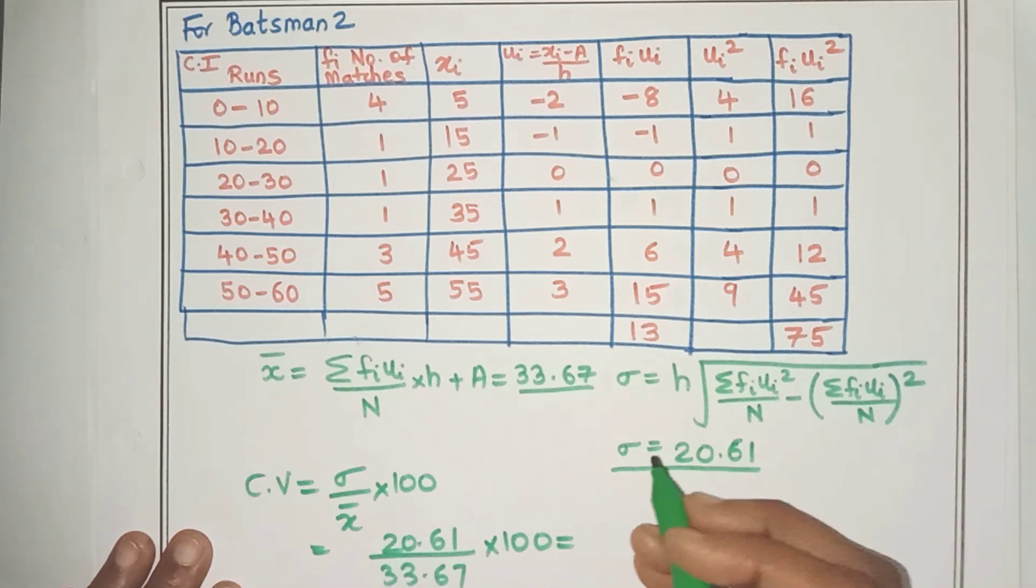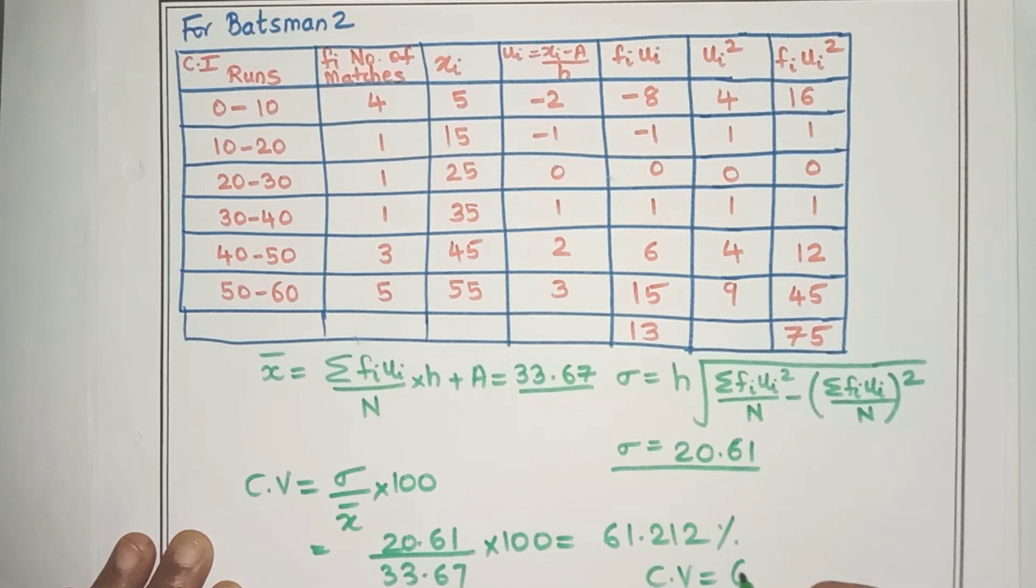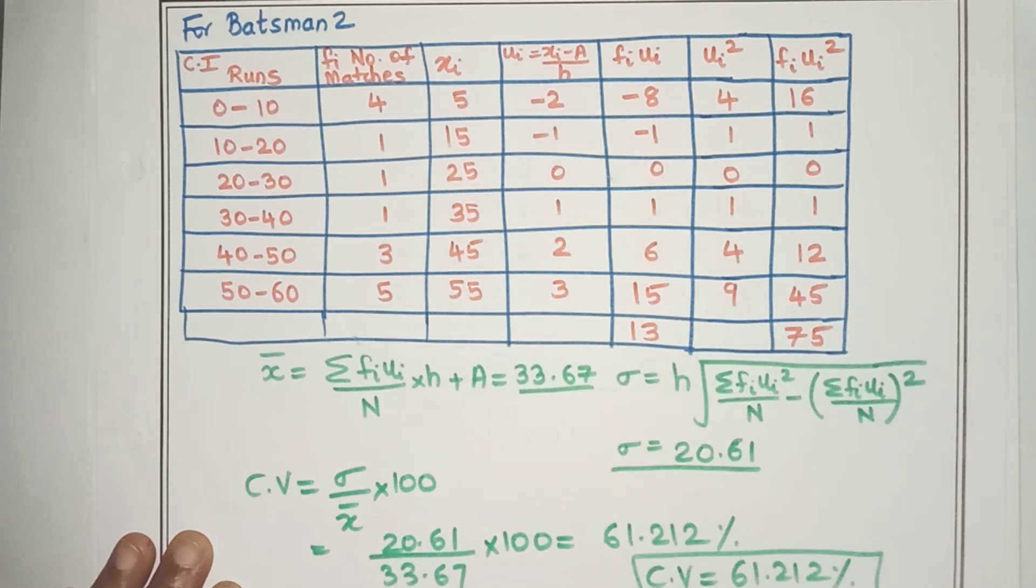So on simplification, you will get the CV to be 61.212 percentage. So for the second batsman, what is the coefficient of variation? 61.212.